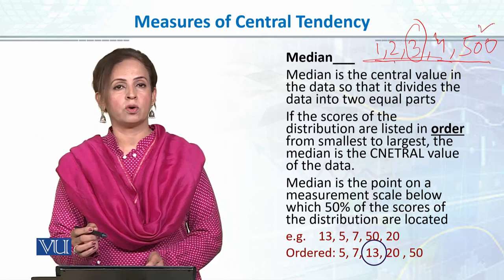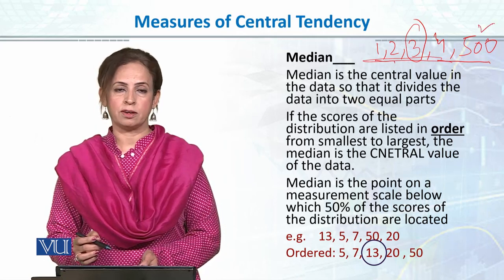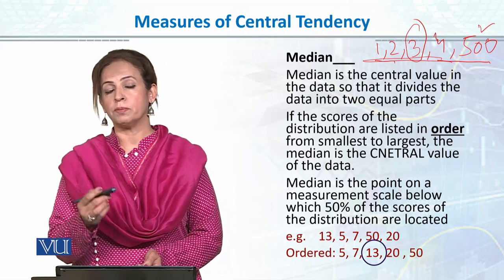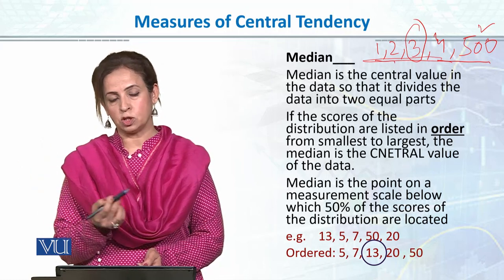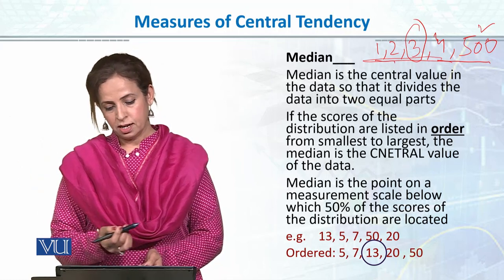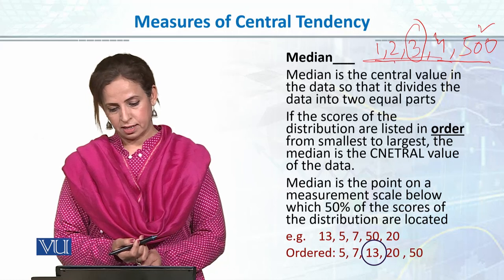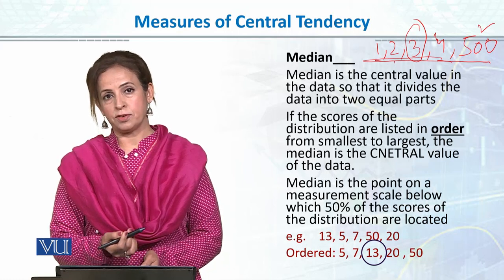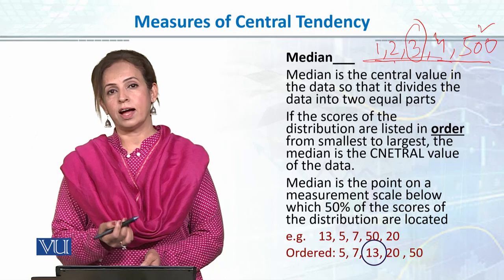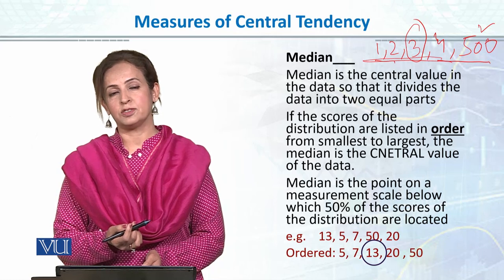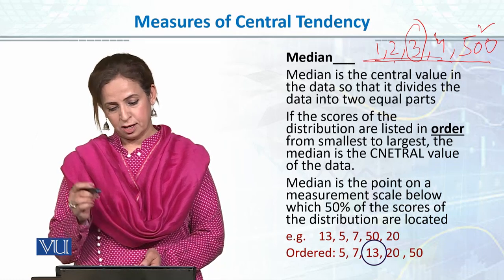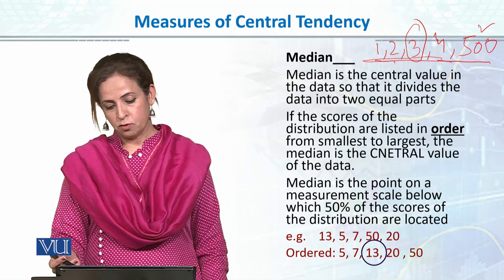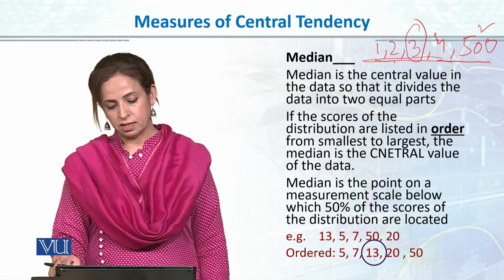Due to one or two extreme values, the mean will jump far ahead, which will not be appropriate. So, median is the fiftieth percentile, and it divides the data into two equal parts, but we find the central value of the ordered data.